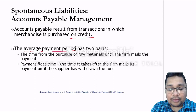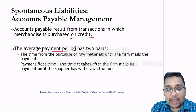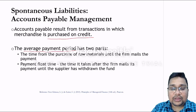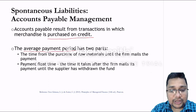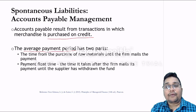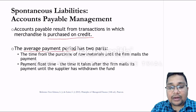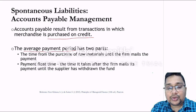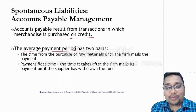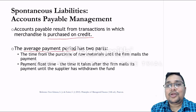The average payment period has two parts. The first is the time from the purchase of raw materials until the firm mails the payment — if you pay by check, this is the duration until you mail the check. The second part is the payment float time: the time it takes after the firm mails its payment until the supplier has withdrawn the funds. If the supplier takes a longer period to collect, you can use their money for a longer period. As a business person, you will always be happy if the average payment period is longer.